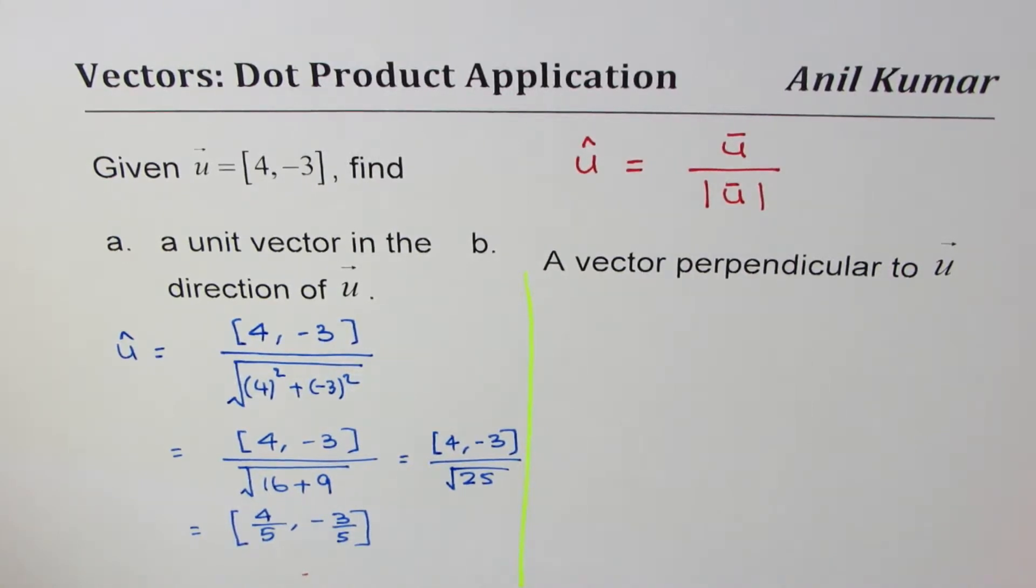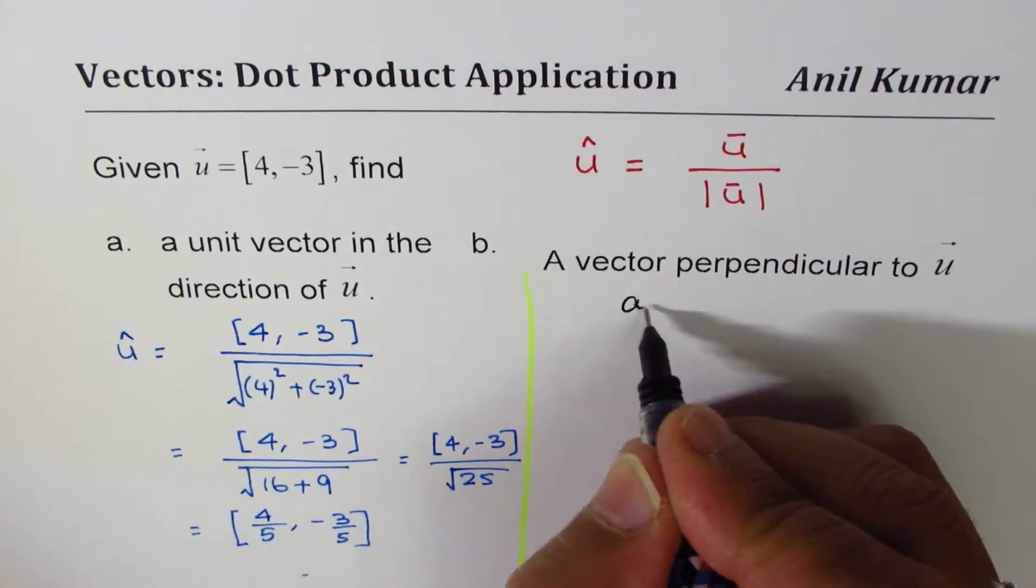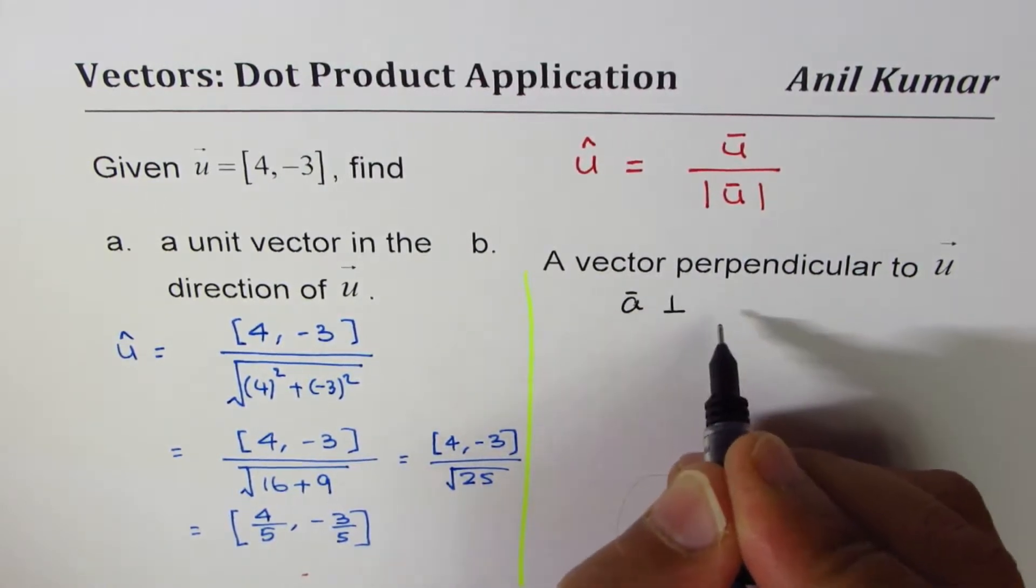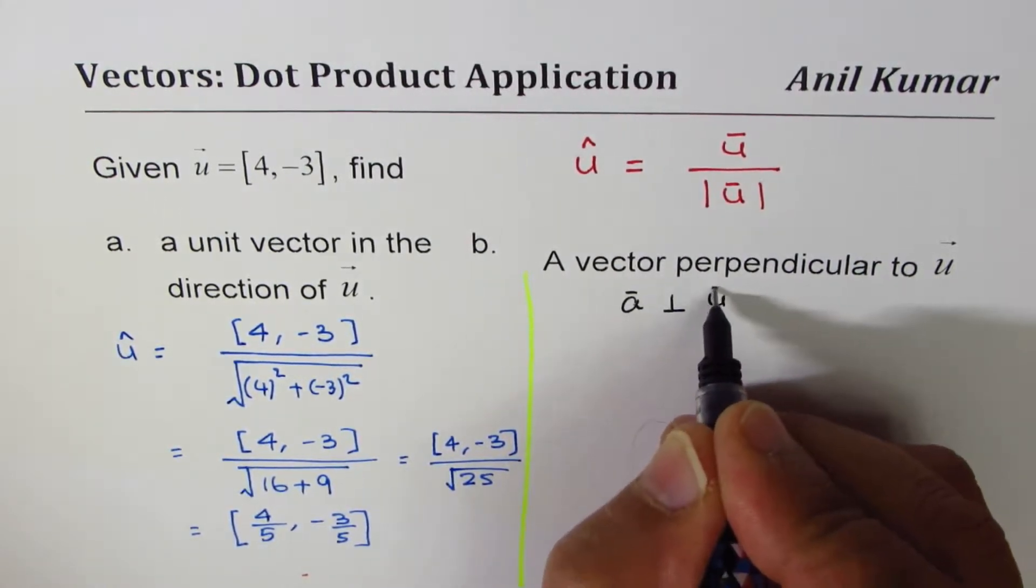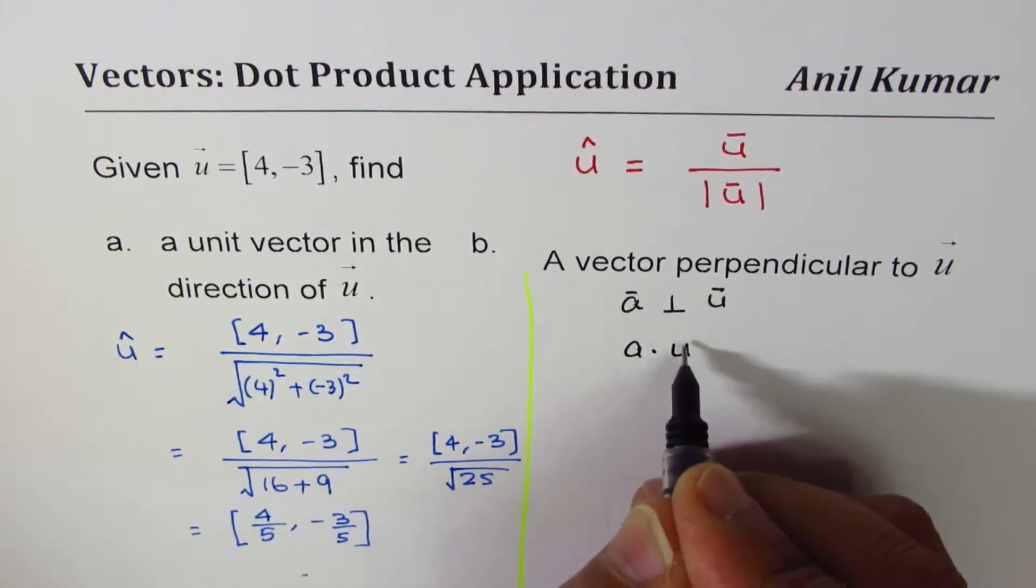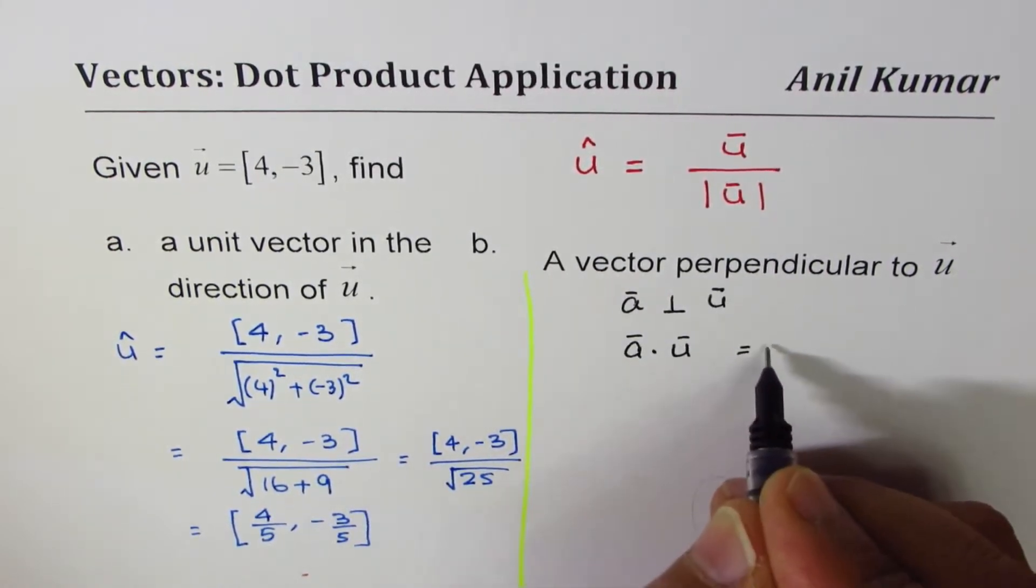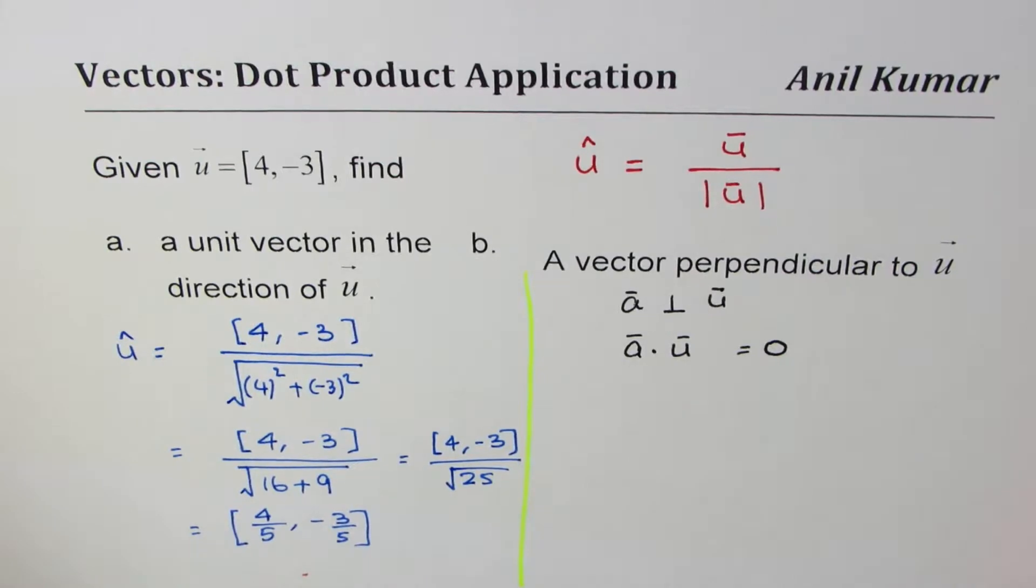Now the second part of this question is to find a vector perpendicular to u. Let's say that vector a is perpendicular to vector u. In that case, a · u should equal 0. That's important to understand.